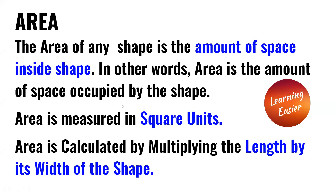Area. The area of any shape is the amount of space inside the shape. In other words, area is the space occupied by that shape. Area is measured in square units and is calculated by multiplying the length by the width of that shape.